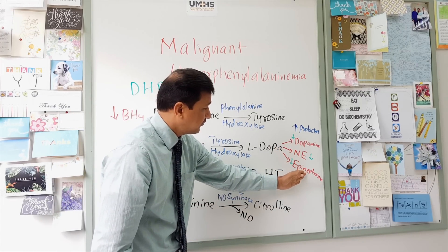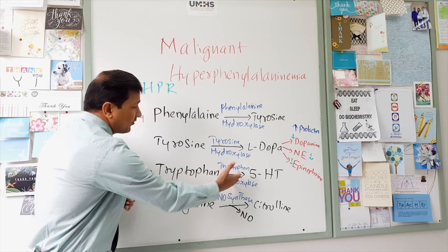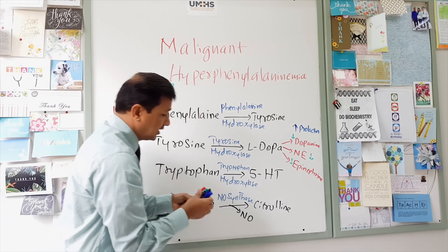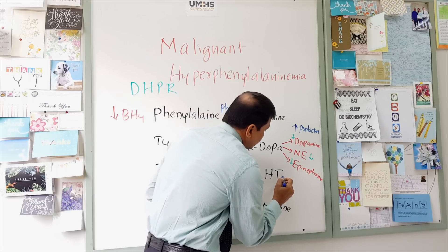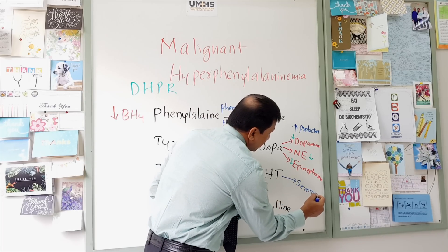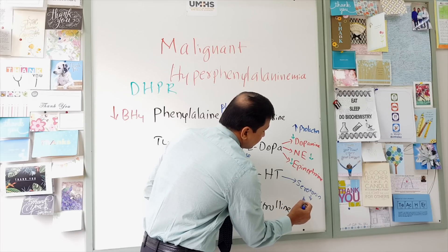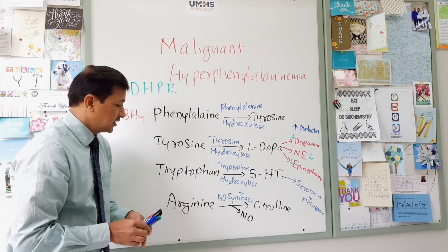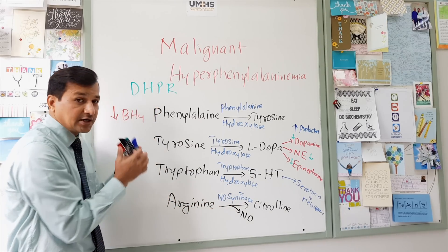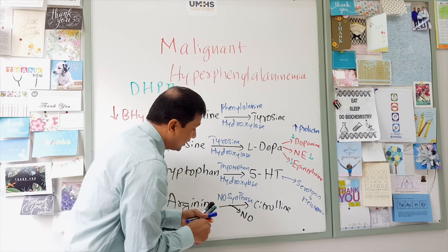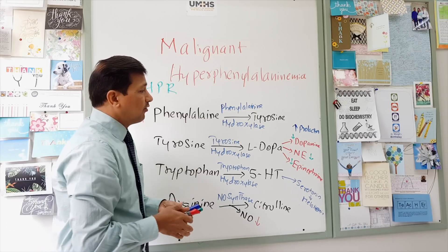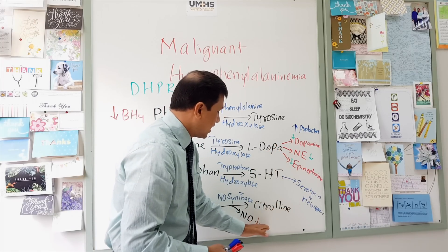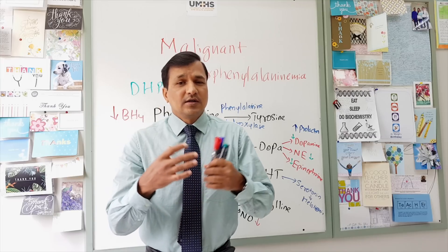Due to decreased tetrahydrobiopterin availability: dopamine is decreased, norepinephrine is decreased, and epinephrine is decreased, while prolactin is increased. At the tryptophan level, decreased BH4 means tryptophan hydroxylase cannot produce 5-hydroxytryptophan, so serotonin — a key neurotransmitter derived from 5-hydroxytryptophan — is decreased. Since serotonin is converted to melatonin, melatonin is also decreased. Additionally, decreased nitric oxide synthase activity leads to decreased nitric oxide production.